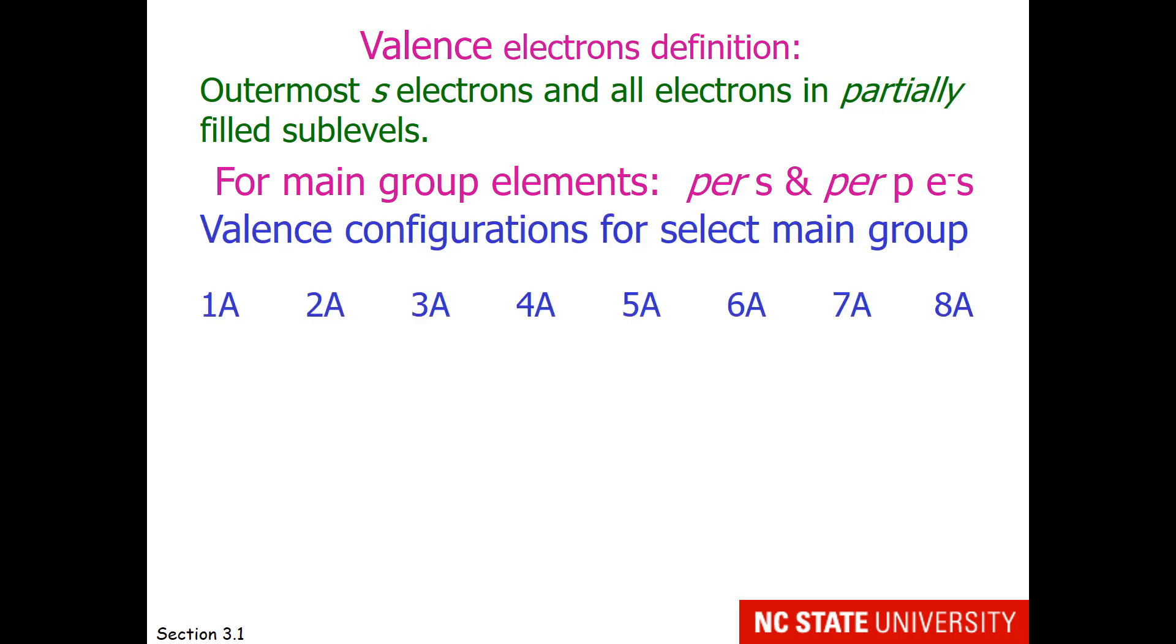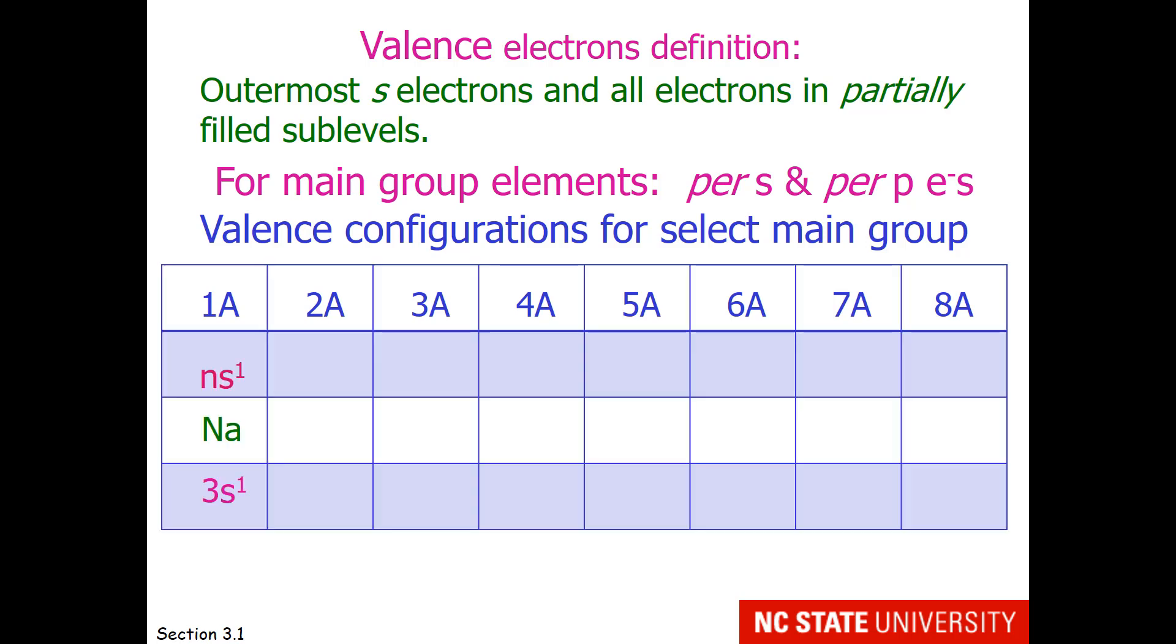Let's look at the valence configurations for select main group elements. Sodium is in the first column, and it has one valence electron, specifically the 3s1. Calcium is in the second column on the periodic table, and it has two valence electrons, specifically 4s2.